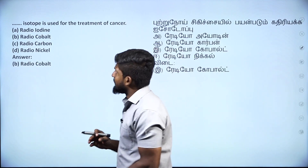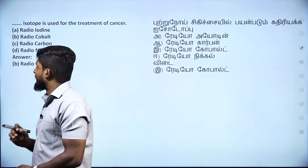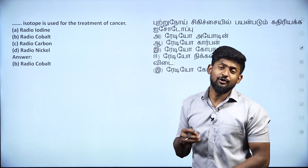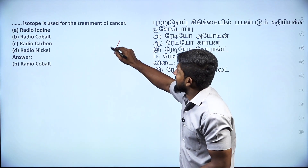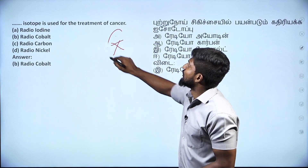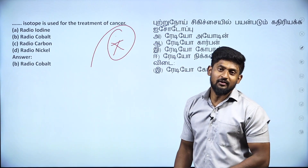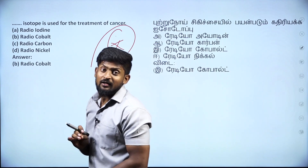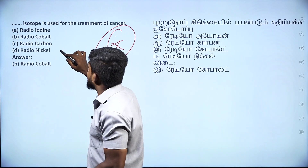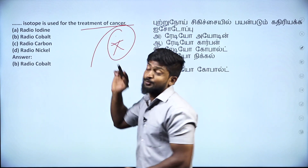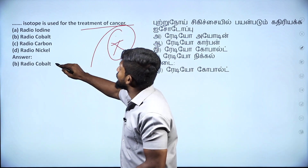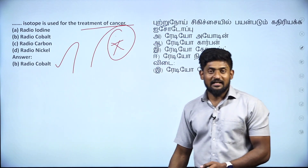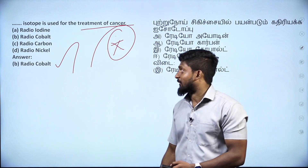Which isotope is used for the treatment of cancer? It is a very important question. Cobalt-60 is used for the treatment of cancer — also called radio cobalt.